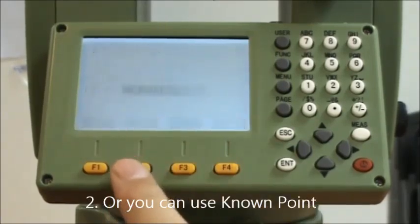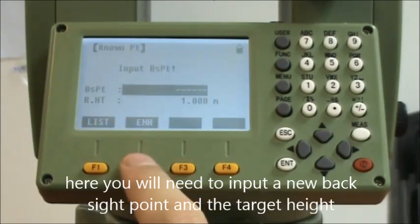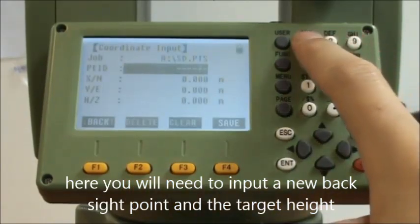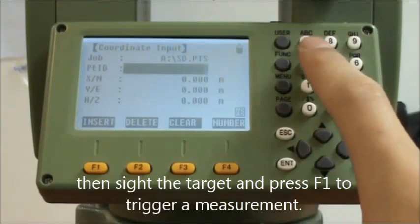Or you can use known point. Here you will need to input a new backside point and the target height. Then sight the target and press F1 to trigger a measurement.